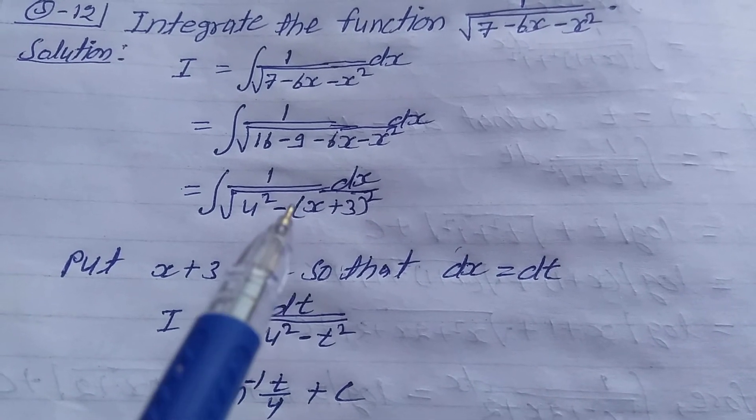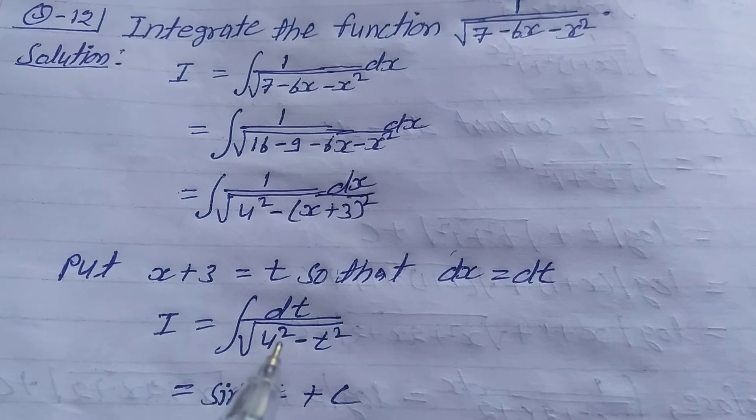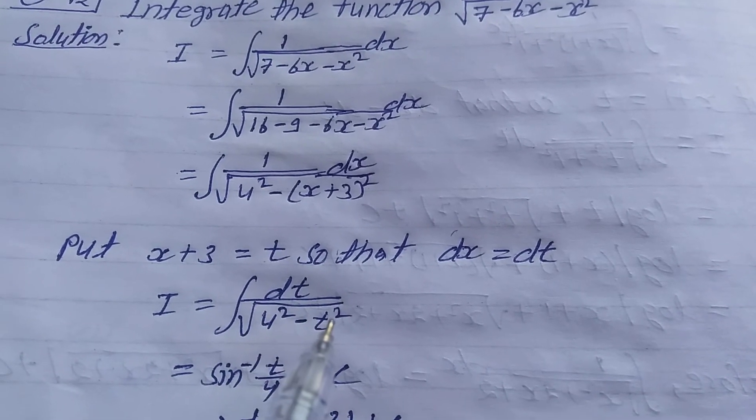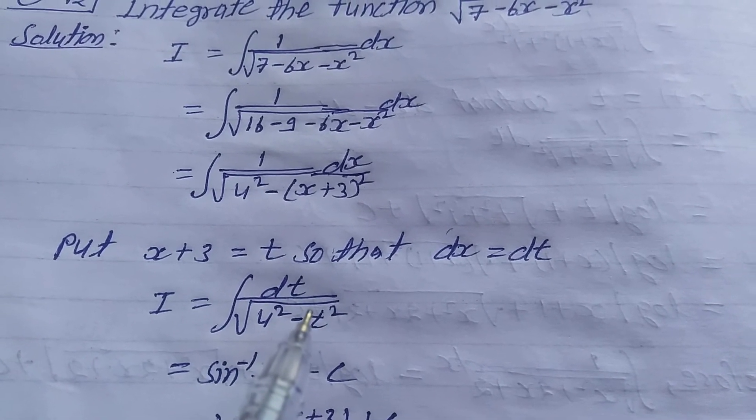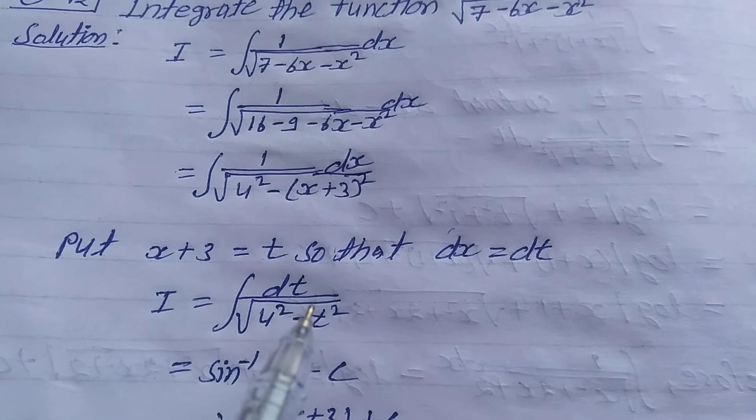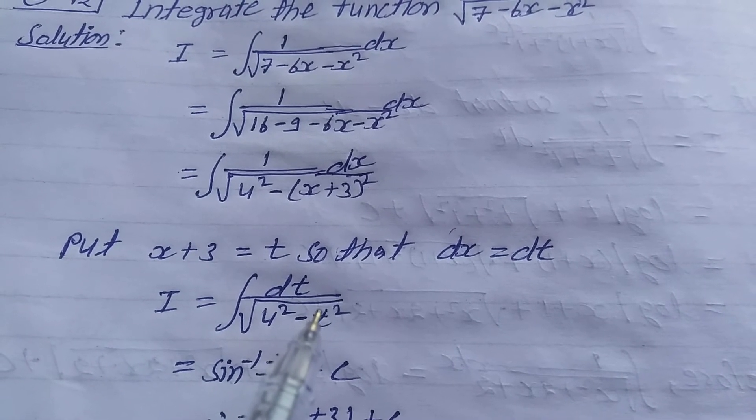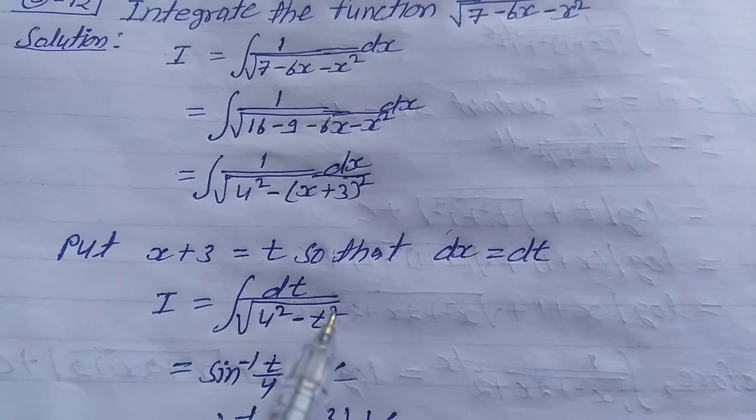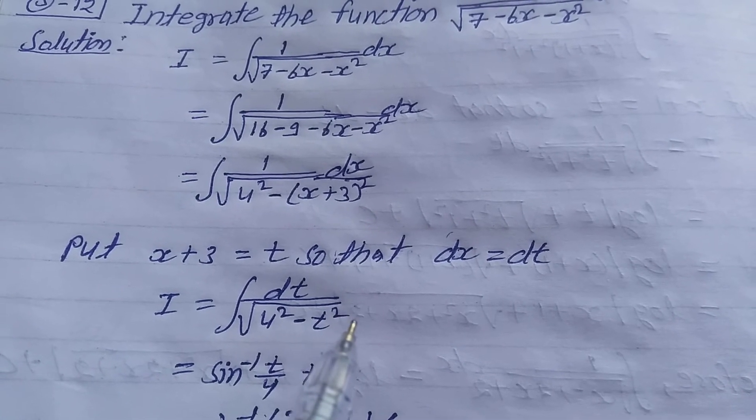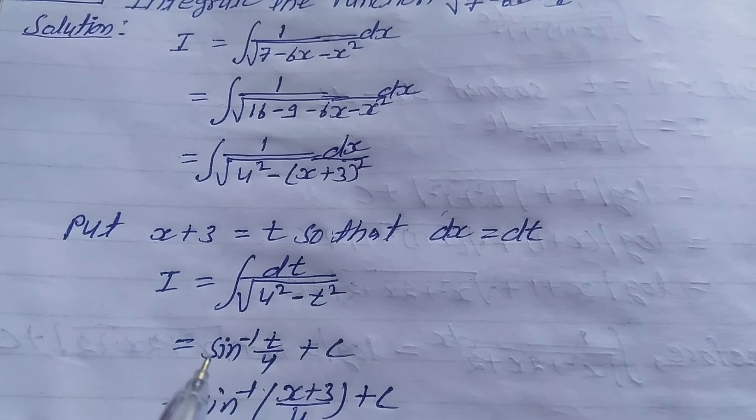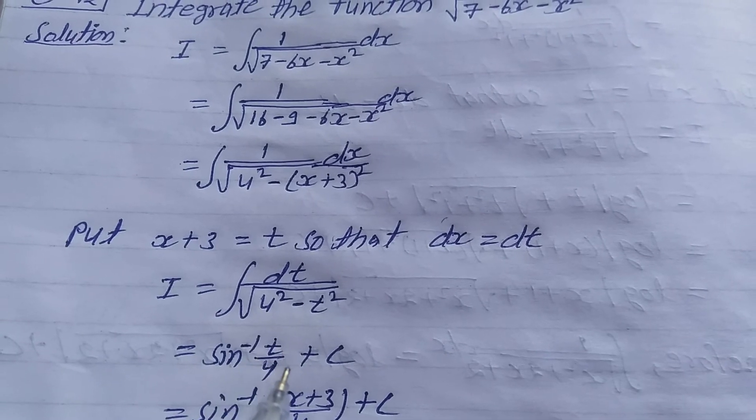Put these values here: I is equal to integration dt upon root of 4 square minus t square. The formula used is integration of dx upon root of a square minus x square is equal to sin inverse x upon a plus c. So this is equal to sin inverse t upon 4 plus c.